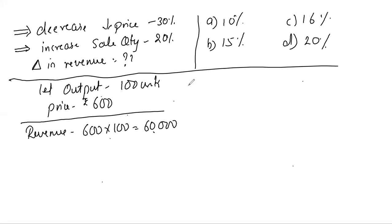Now let's see the change. If my price is decreasing by 30%, so can I say 600 minus 30% of 600? The answer is 420.